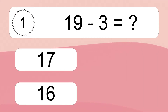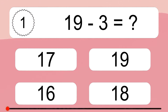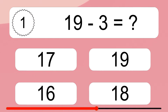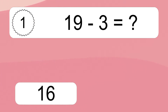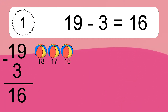19 minus 3 equals what? 19 minus 3 equals 16. Let's count it: 18, 17, 16.